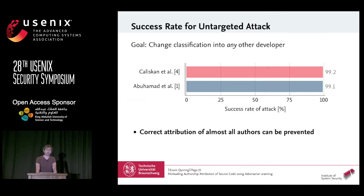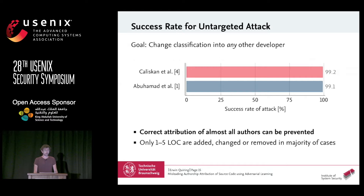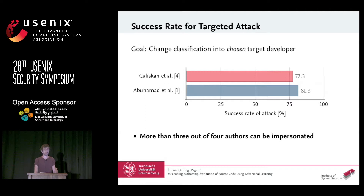Our results show that in the untargeted scenario, we can prevent correct attribution for both methods in almost all cases, while only changing one to five lines of code in the majority of cases. On average, each file has 74 lines of code, which underlines the very targeted nature of our transformations.